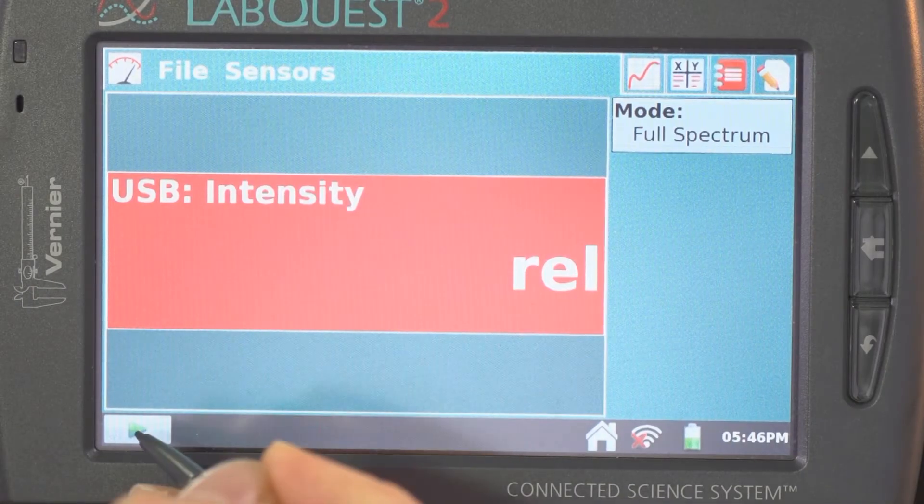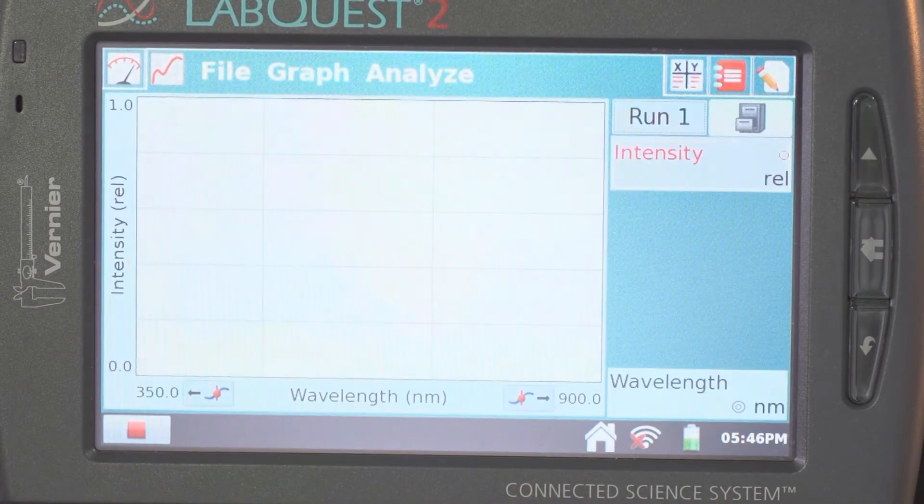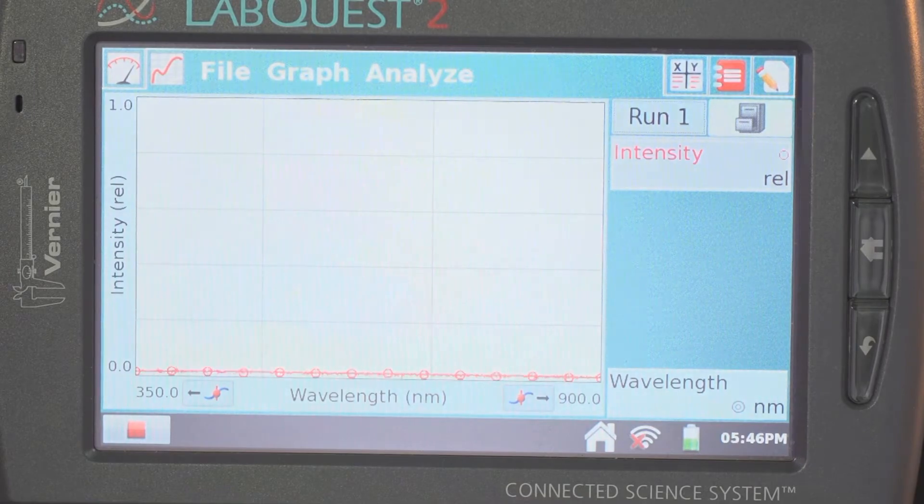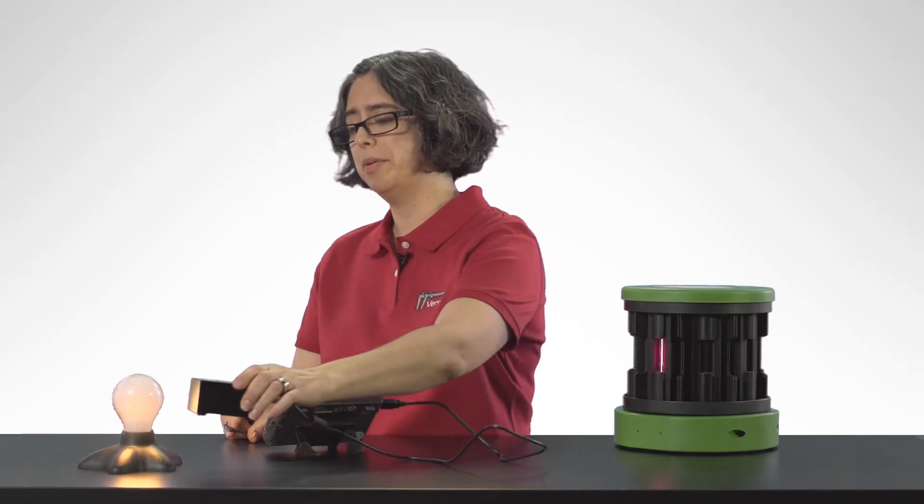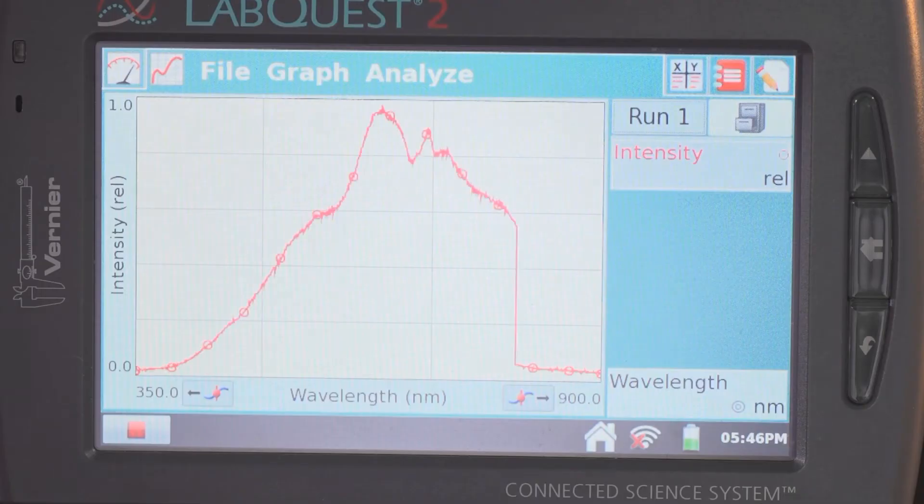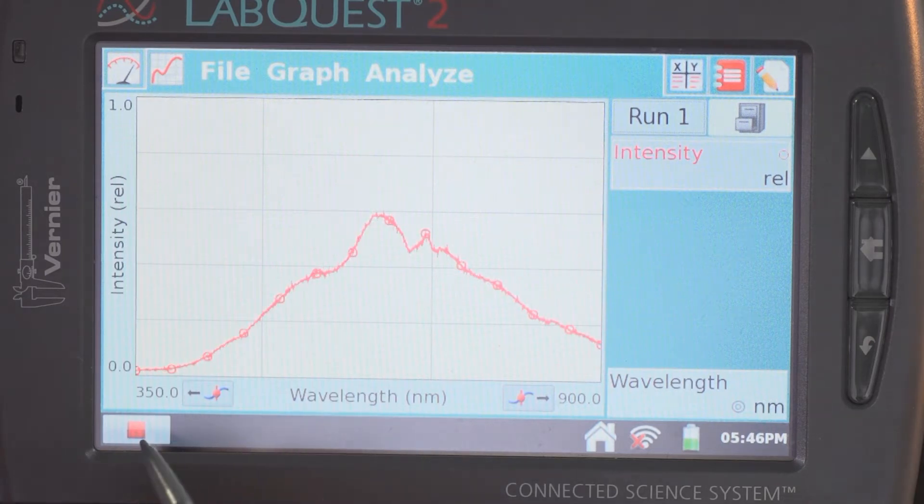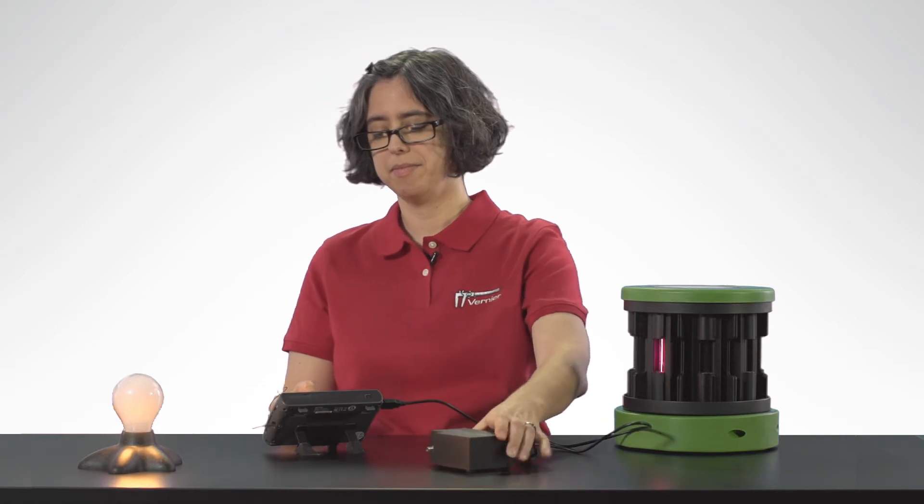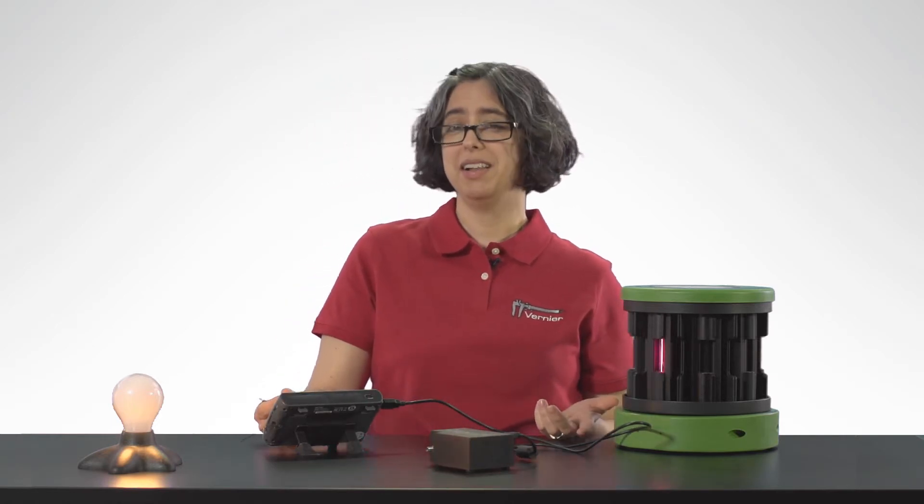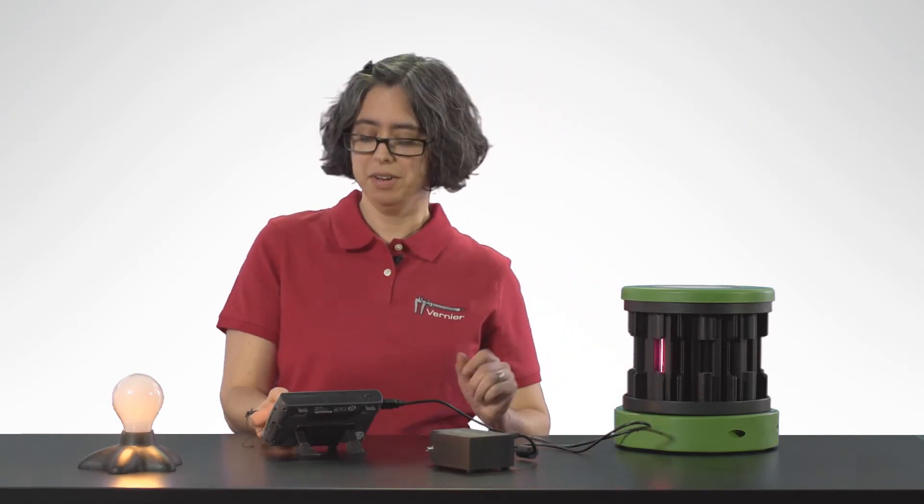When I tap collect, the spectrometer immediately starts collecting data. I will aim the aperture at this light bulb. When I'm satisfied with the graph, I will stop collecting data and I can analyze the graph. However, I'm not going to analyze it at this time because I want to show you another demonstration.